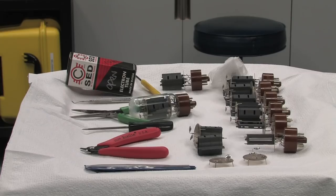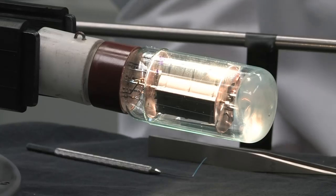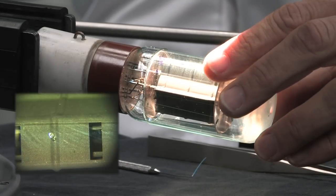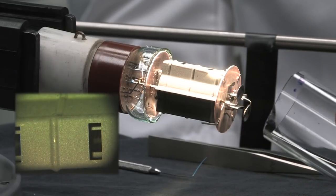Today we're going to be dissecting an SED 6L6GC vacuum tube. First I'm going to grab the glass envelope and pull it off the tube slowly. The first part of the tube you see in the microscope view is a plate, and that's what everybody sees when they look at a tube.